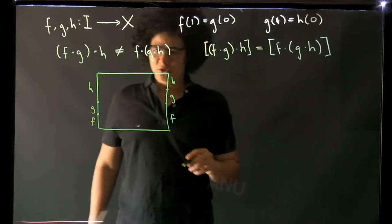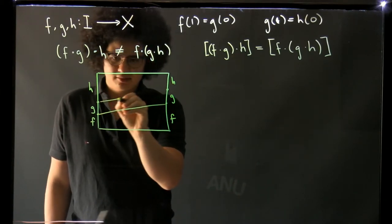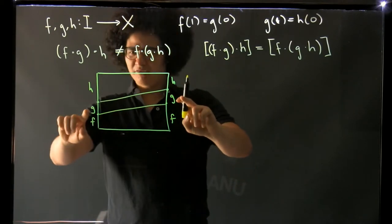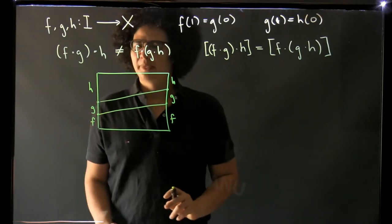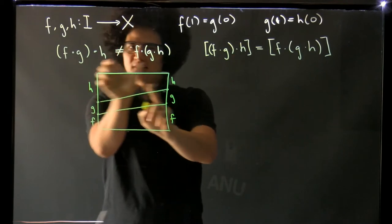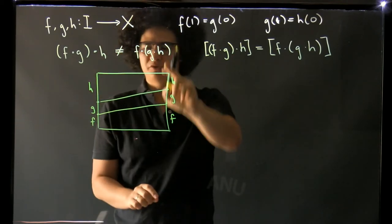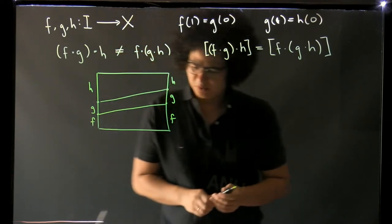And what does the homotopy here look like? Well it looks like this. So g is always happening at four speed, it just shifts where in the homotopy it's happening. And then as you move from here to here, h gets faster and faster until it's happening at four speed and f gets slower and slower until it's happening at double speed.